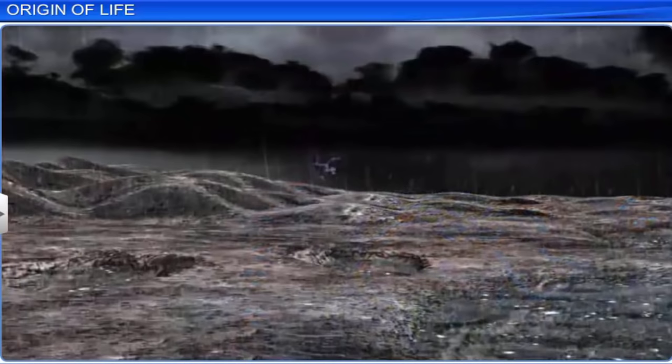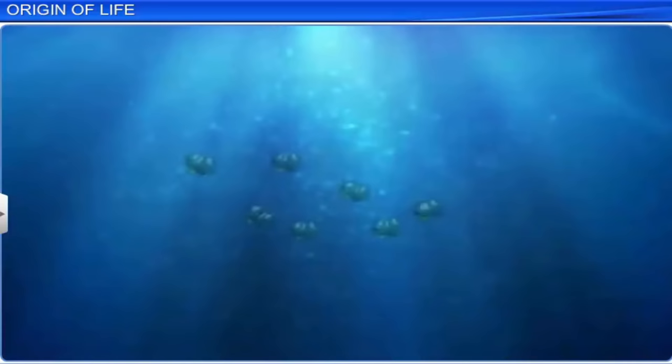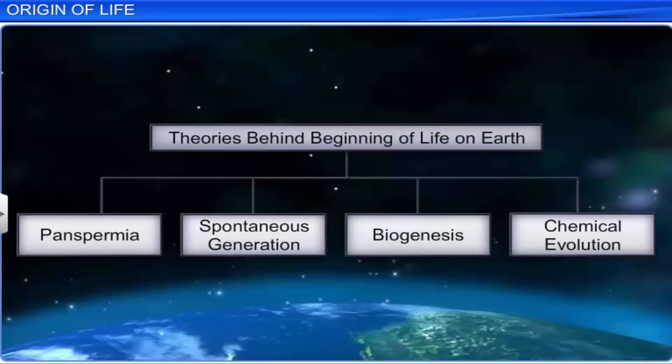Some of the water vapor cooled and came down as rain, which filled all the deep depressions on the earth and formed oceans. It is estimated that life appeared on earth 500 million years after its formation. There are different theories that try to explain the beginning of life on earth. Some of them are panspermia, spontaneous generation, biogenesis and chemical evolution.